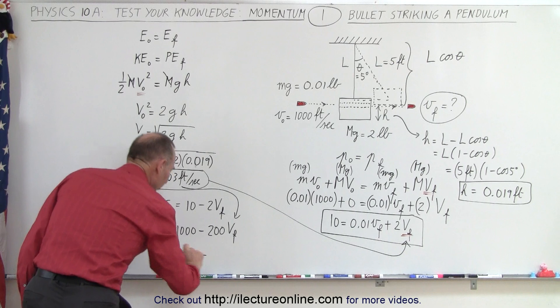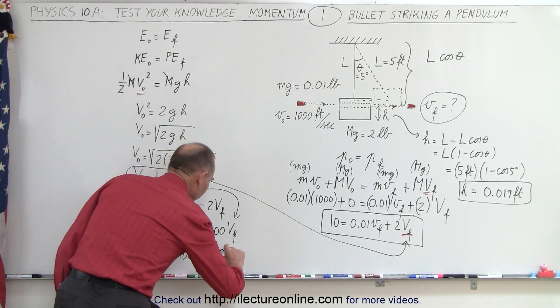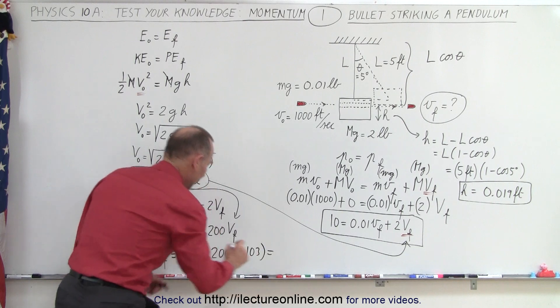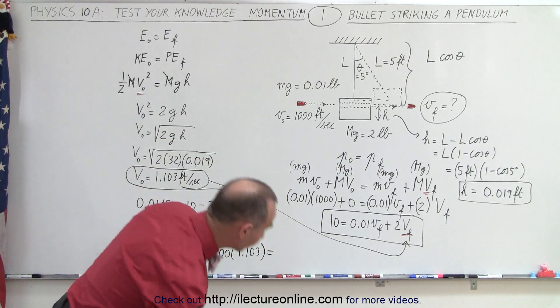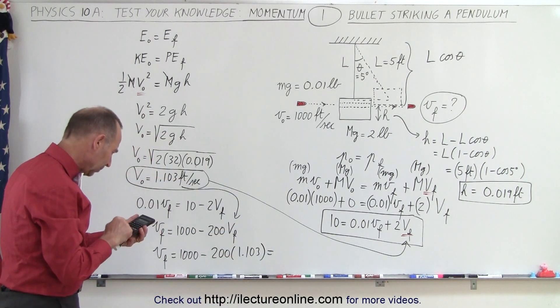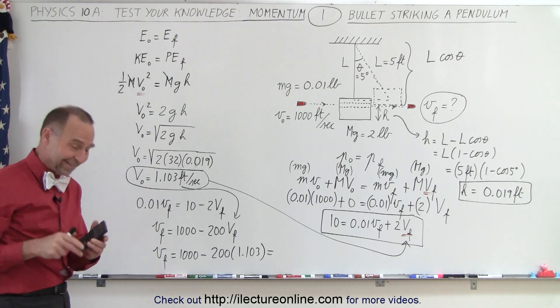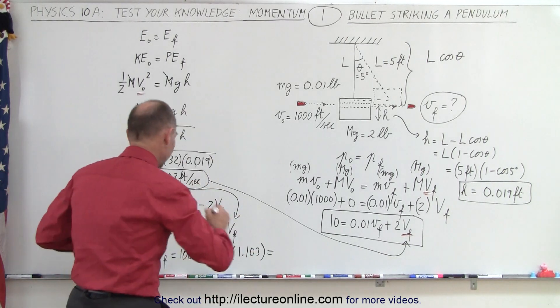V final of the bullet equals 1000, this is in feet per second, minus 200 times 1.103. So multiply that times 200, subtract that from 1000, and we get 779 feet per second.